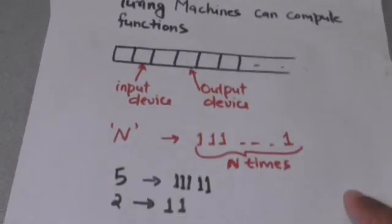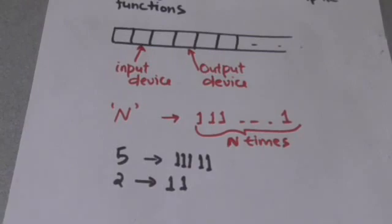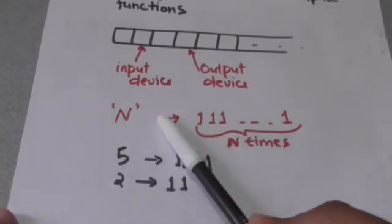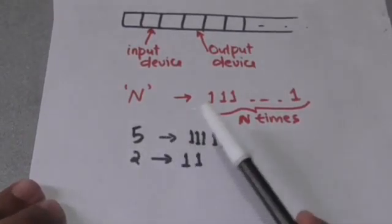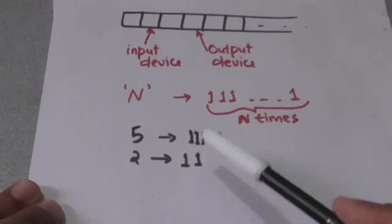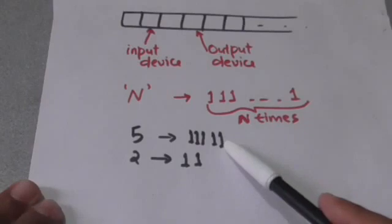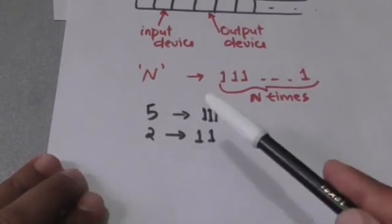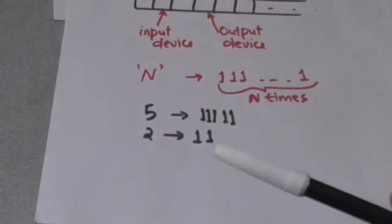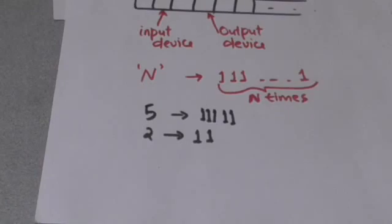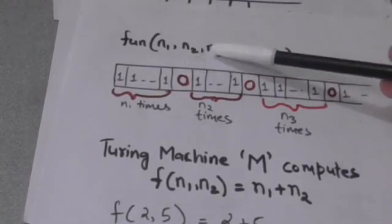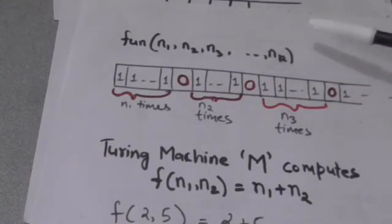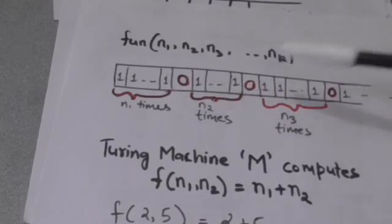When a Turing machine computes numeric functions of numeric arguments, the integers are represented on the tape in unary: integer n is represented by a string of n ones. For example, 5 is represented by 1 1 1 1 1, and 2 is represented by 1 1.